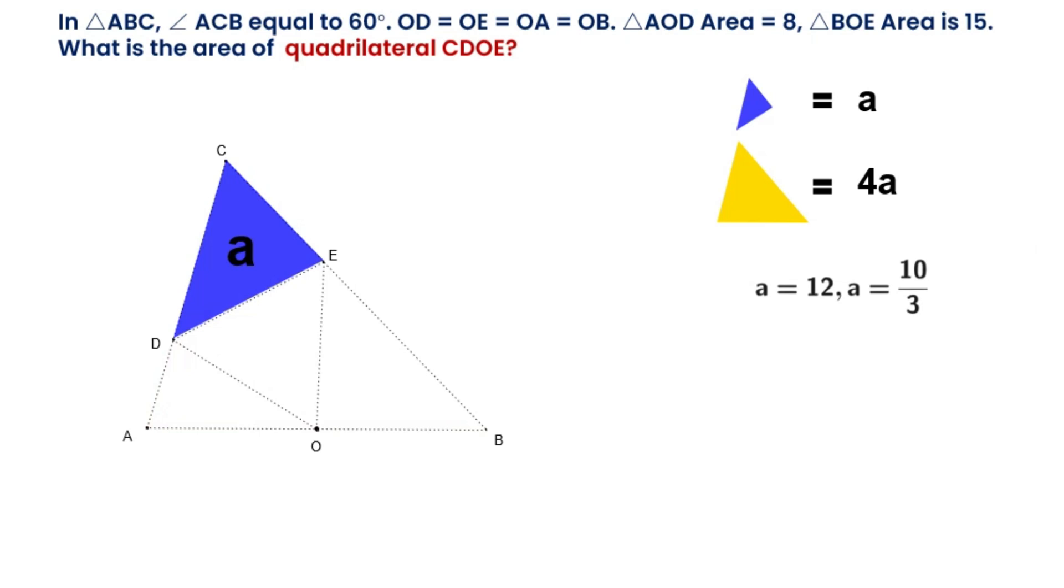Let's first see that when A equals 10 over 3, the area of triangle ABC equals 40 over 3, which is less than 15. So the value A equals 10 over 3 doesn't hold.